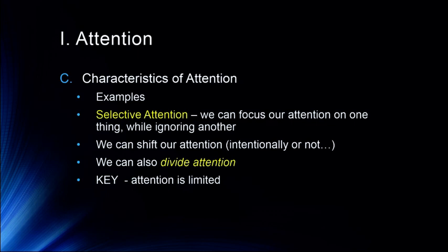Some characteristics of attention — and we're going to get into some specifics about this as we move through discussing attention in some later lectures. The first thing to understand is that we can focus our attention on one thing while ignoring another, and we call this selective attention. We'll talk about visual selective attention. Today we're going to talk about some early discussions of auditory selective attention. We can select things to attend to and ignore other things, and that's a really important process. We'll also talk about some important ways in which we oftentimes have difficulty.